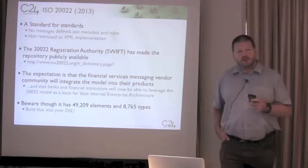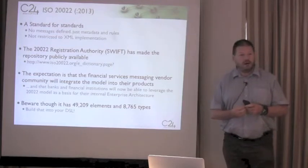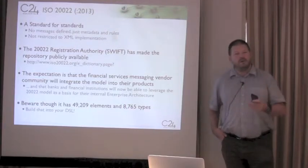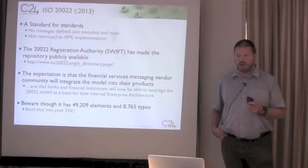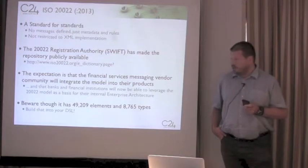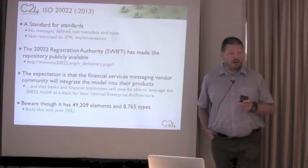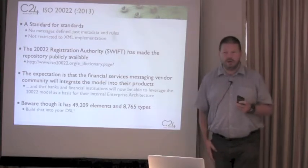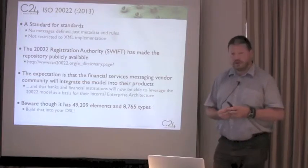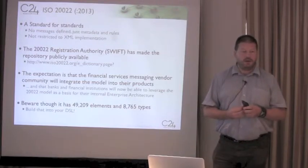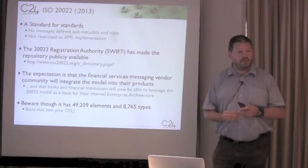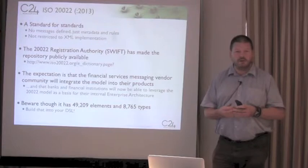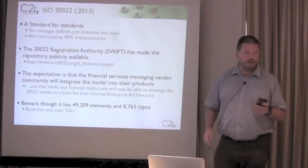ISO 20022 goes further. It makes a very good attempt at defining different types throughout banking as a trade moves from the front all the way through the STP process to settlement in the back. But if you take the very latest standard, there are 49,209 elements. Put them all into an XML tool and you'll find those 49,000 elements and 8,700 different types — meaning those are the types you have to map to. So even with a DSL, it still gives you quite a headache.